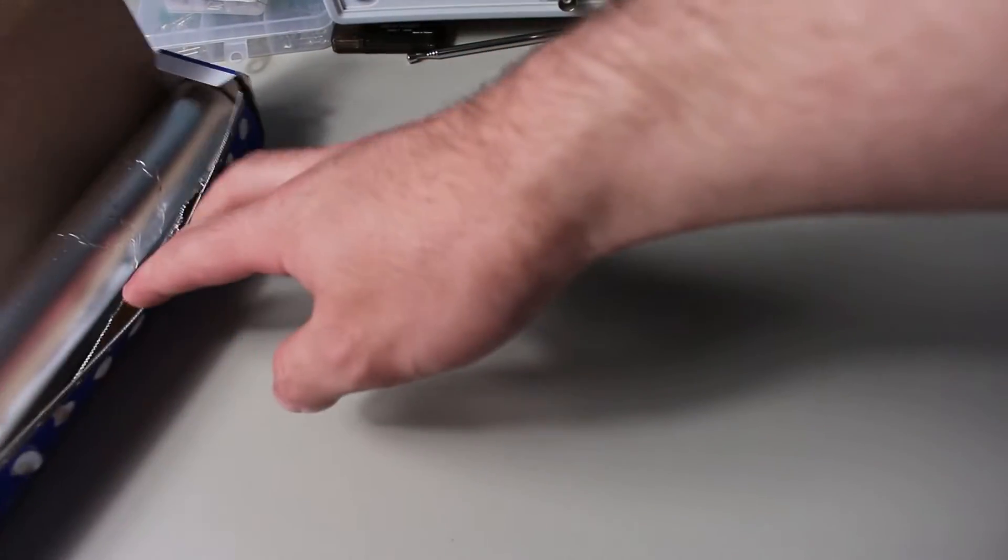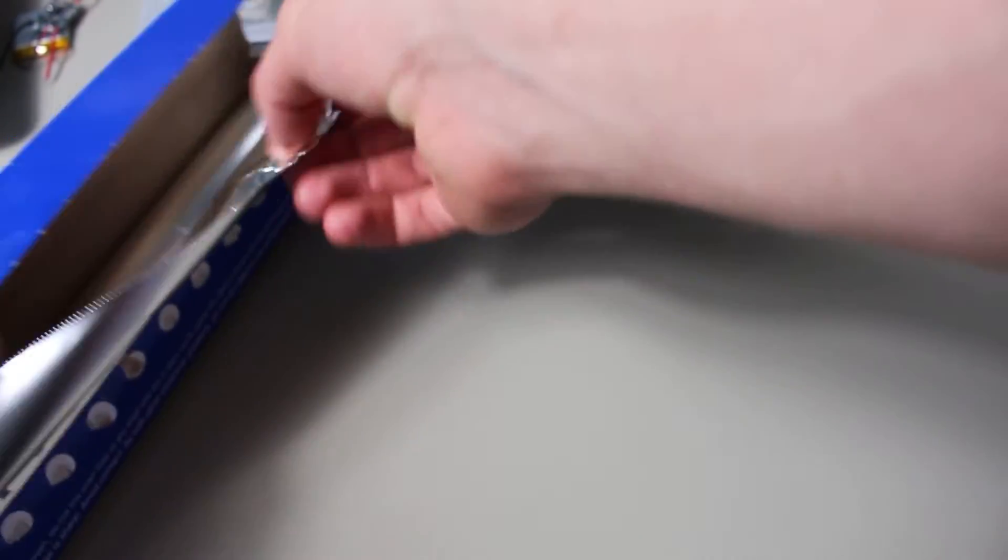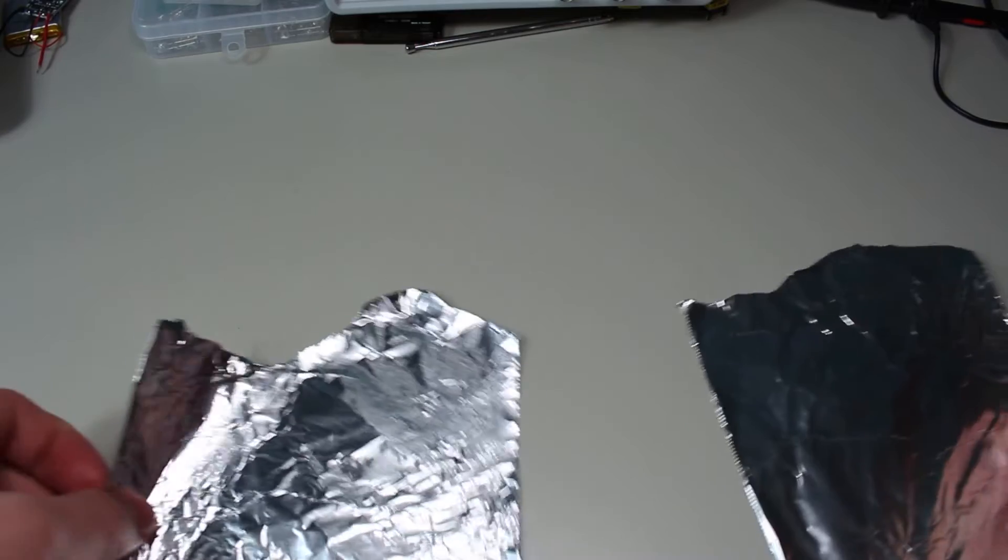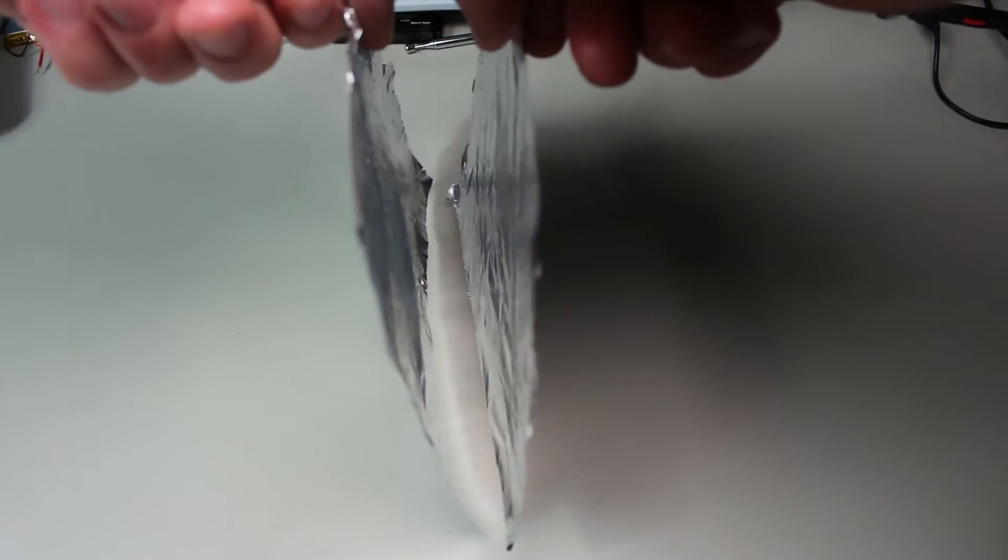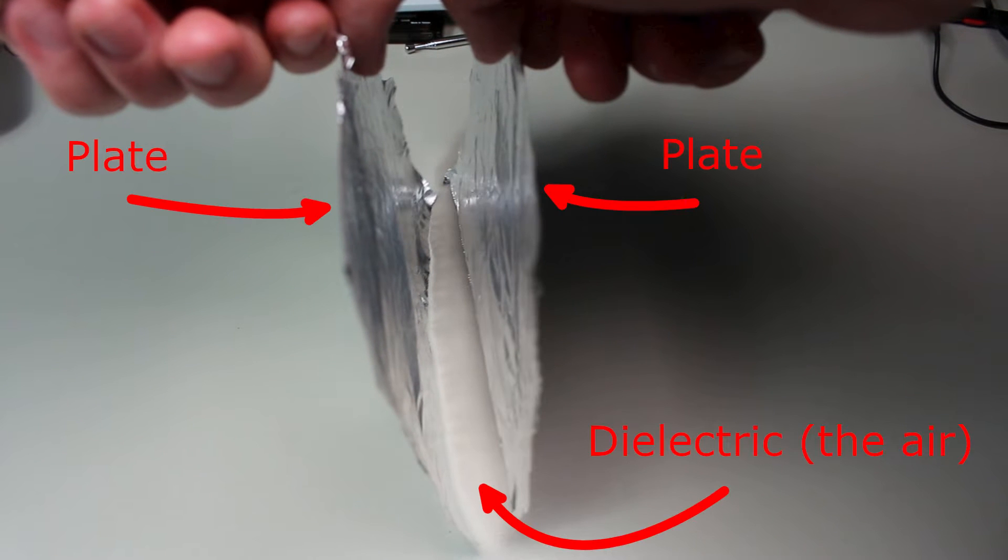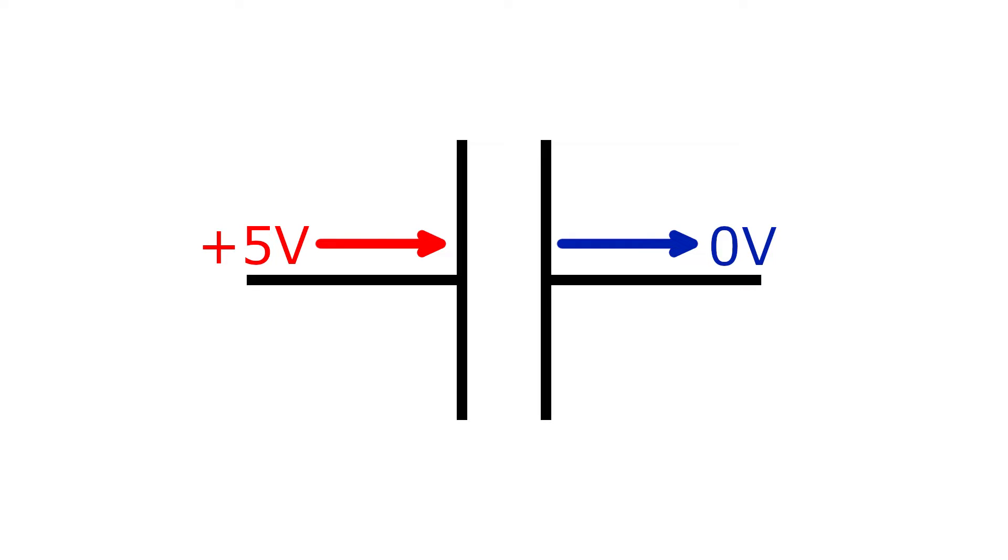Many people get confused by the physics explanation of capacitors so I'll try to keep it simple. We are more focused on the practical use cases anyways. Basically a capacitor is made up of two electrically conductive plates separated by a non-conductive material. This non-conductive material is called the dielectric. Different dielectrics will cause a capacitor to have a higher or lower capacitance. Now here comes the confusing part. When we apply a voltage to each plate, current will flow through the dielectric into the other plate and charge it up until the maximum voltage difference is reached.